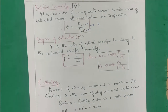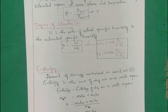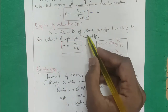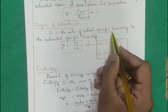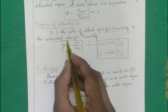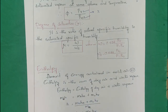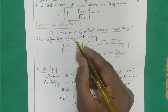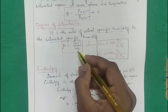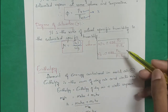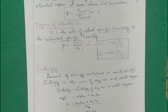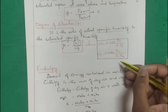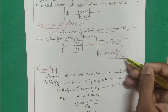Degree of saturation is the ratio of actual specific humidity to saturated specific humidity: μ = W / Ws, where Ws = 0.622 pvs / (P − pvs).